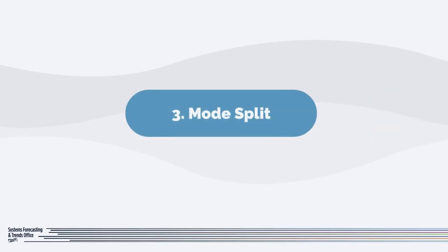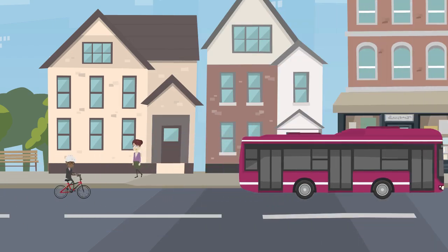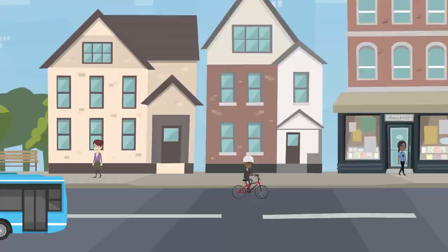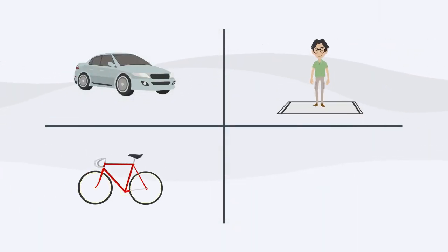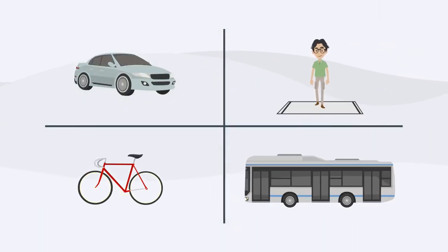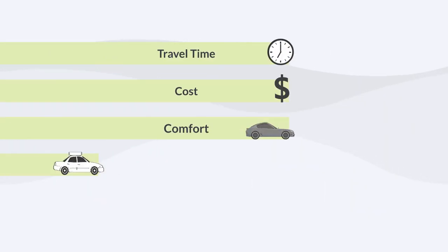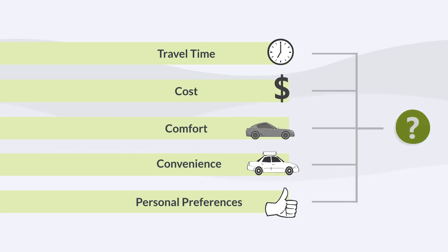Next is mode split. Here, the type of transportation for each trip is determined, considering options like driving alone, carpooling, walking, biking, or public transportation. Factors such as travel time, cost, comfort, convenience, and personal preferences all influence the choice of transportation mode.